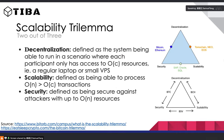Let's assume the trilemma is true and you can only pick two of the three. Companies obviously want security, so the choice narrows to decentralization vs. scalability. Organizations like Bitcoin and Ethereum pick decentralization — shown as the blue dot on the left side of the triangle. Interestingly, most companies historically — SQL, Oracle, Facebook databases — picked scalability over decentralization because it's more efficient for them.